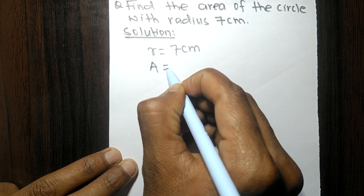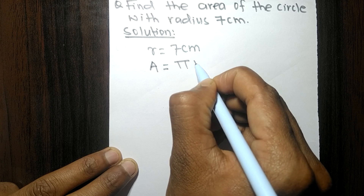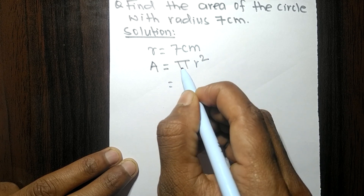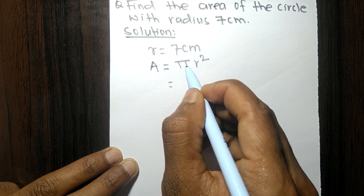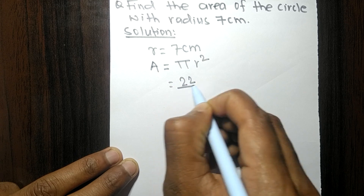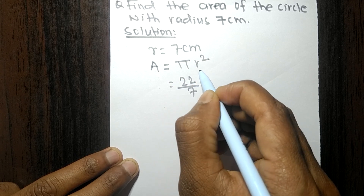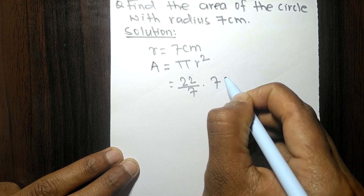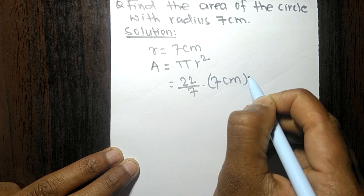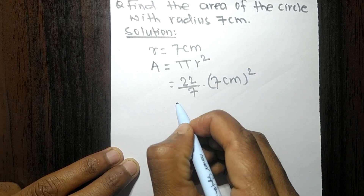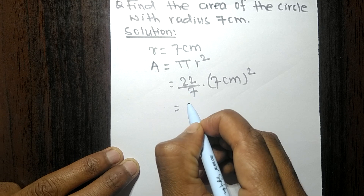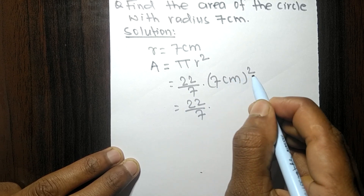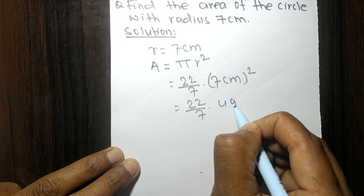The area of a circle is equal to π r squared. The value of π is 22 by 7, and the radius we have been given is 7 centimeters. So r squared is 7 centimeters squared, which means 49 centimeters squared.